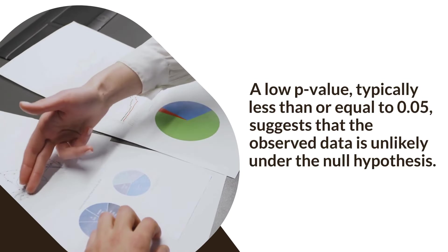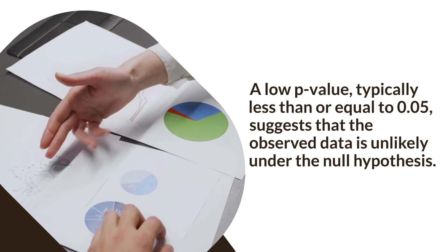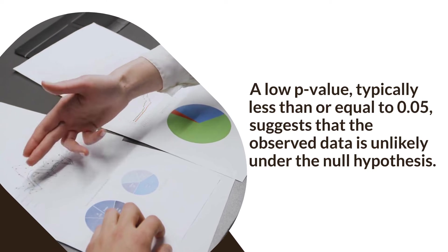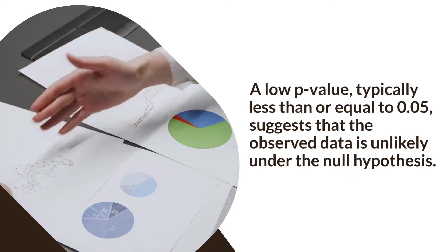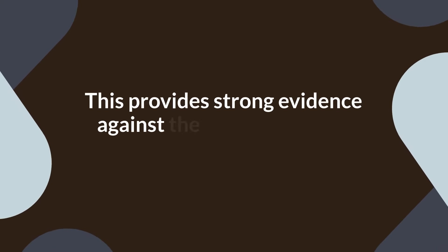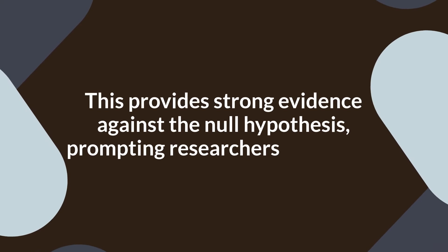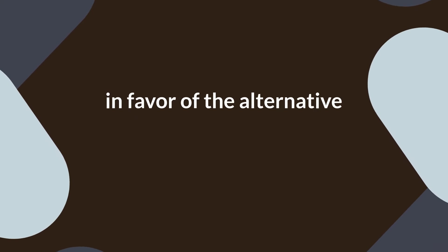A low p-value, typically less than or equal to 0.05, suggests that the observed data is unlikely under the null hypothesis. This provides strong evidence against the null hypothesis, prompting researchers to reject it in favor of the alternative hypothesis.